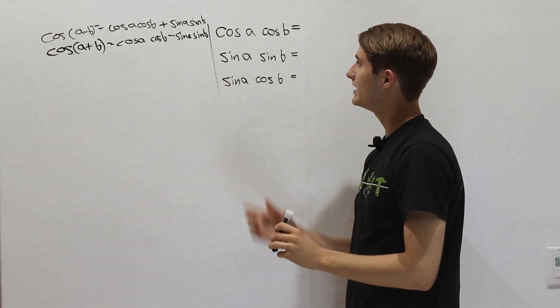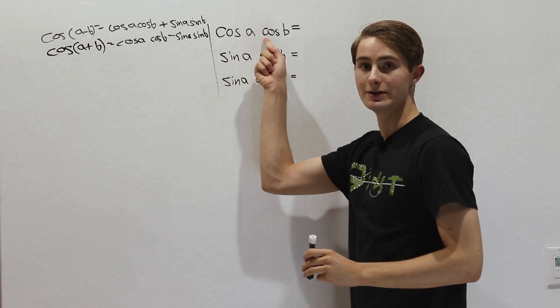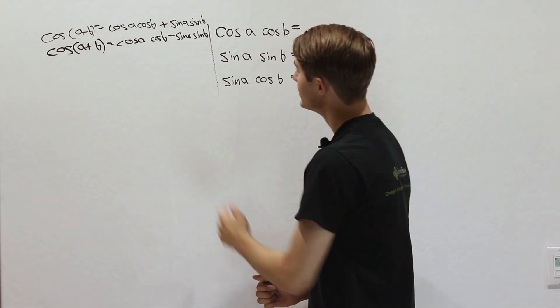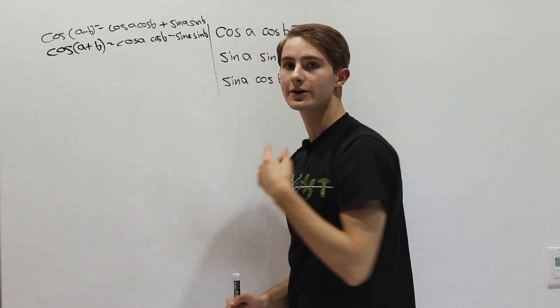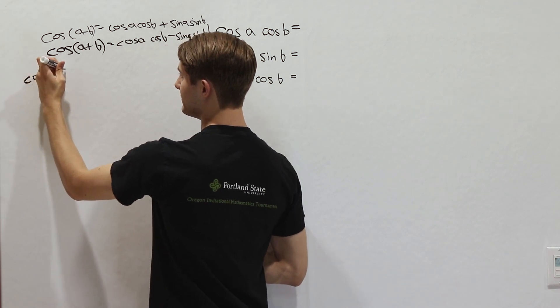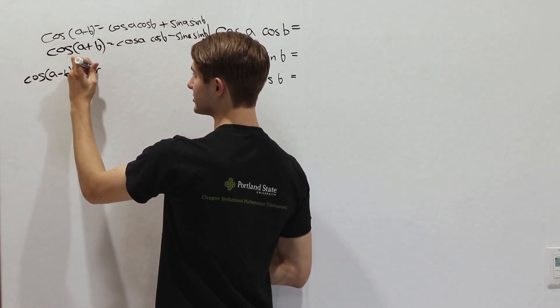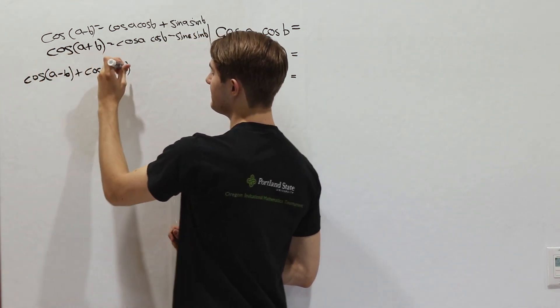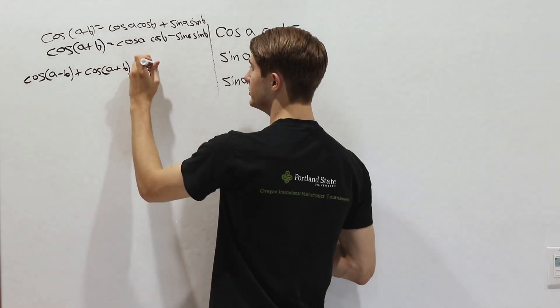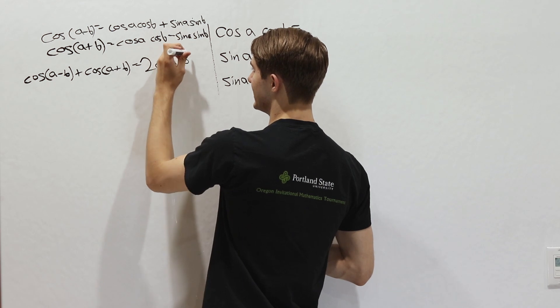Now let's say we wanted to isolate cosine a cosine b right here. Well, if we add these two equations together, notice that the sines over here are going to cancel out. So we'll get that the cosine of a minus b plus the cosine of a plus b is equal to, when we add these two together, we're going to get 2 cosine a cosine b.